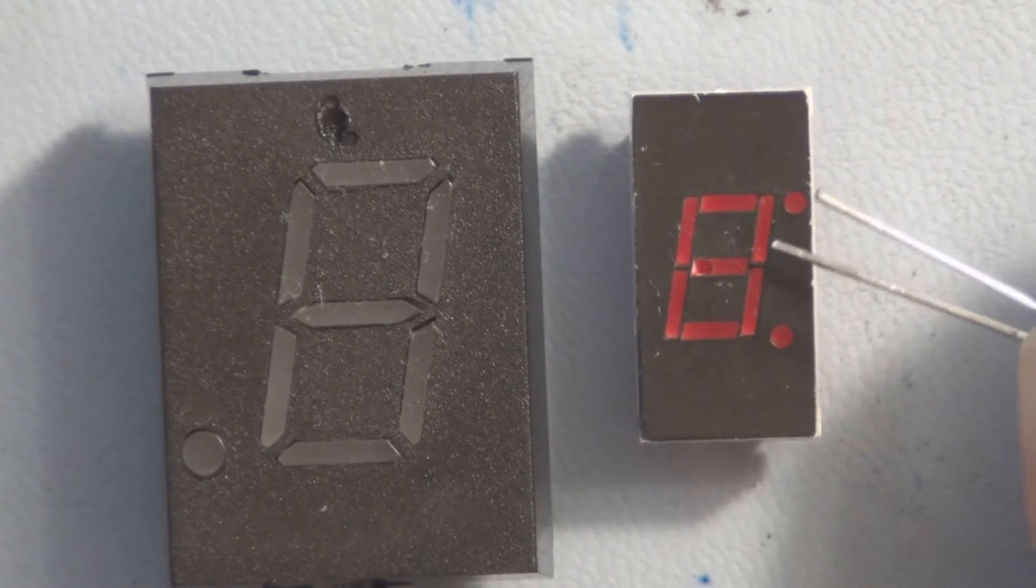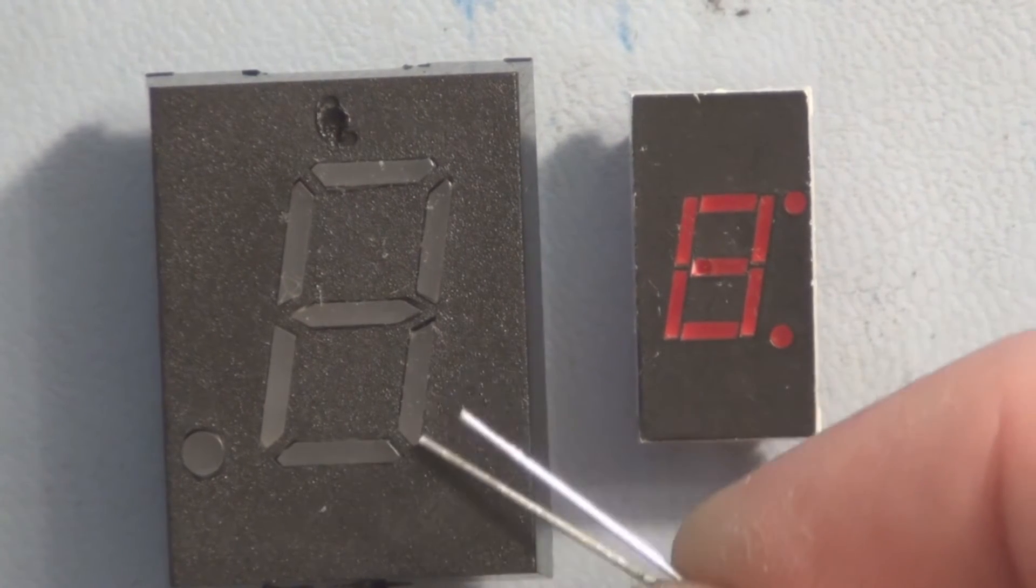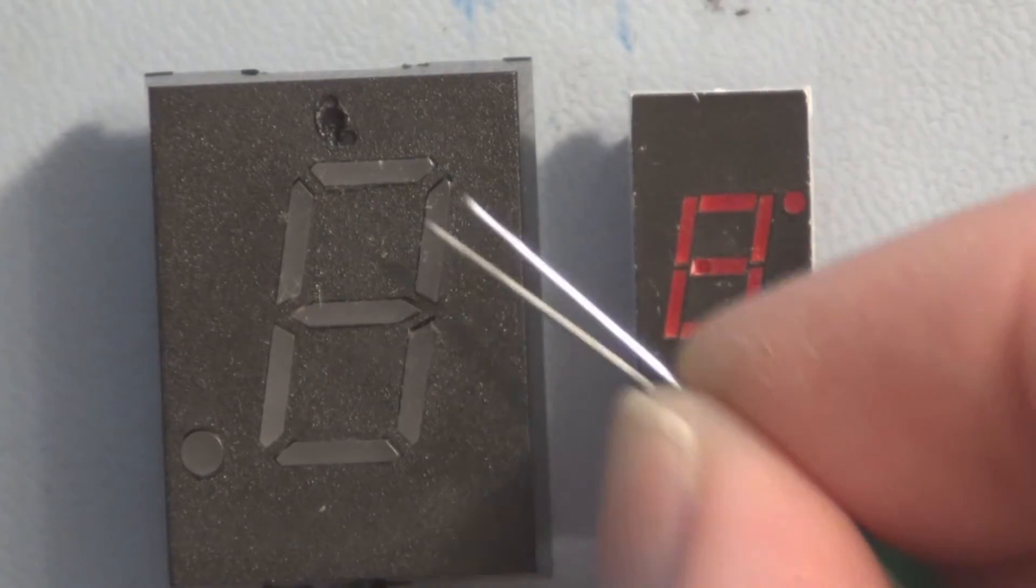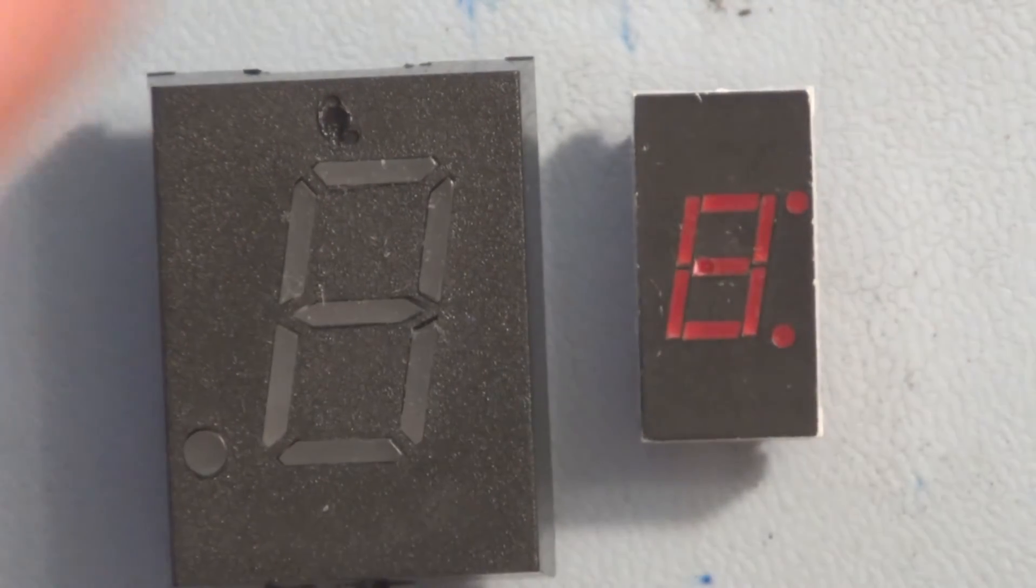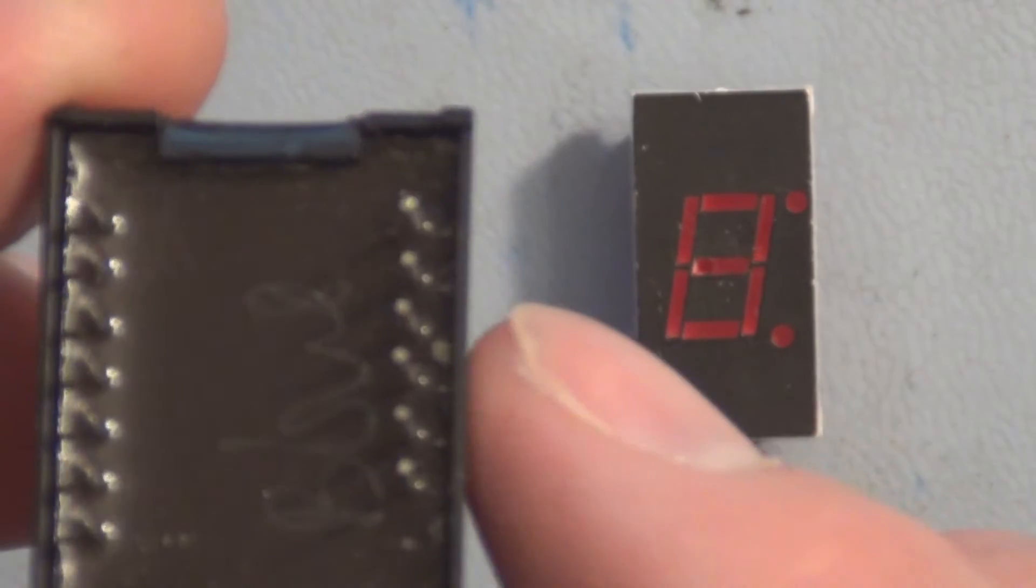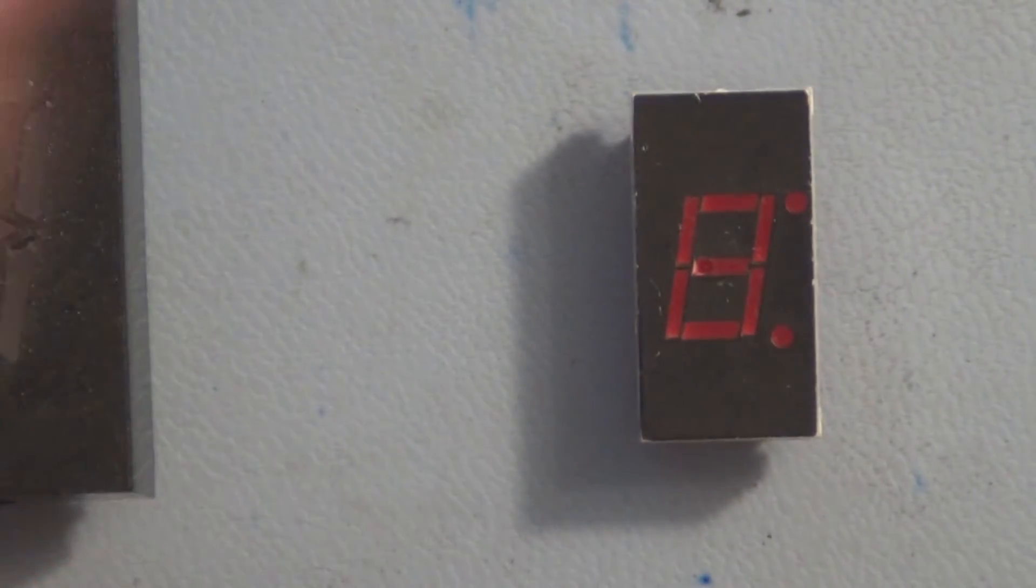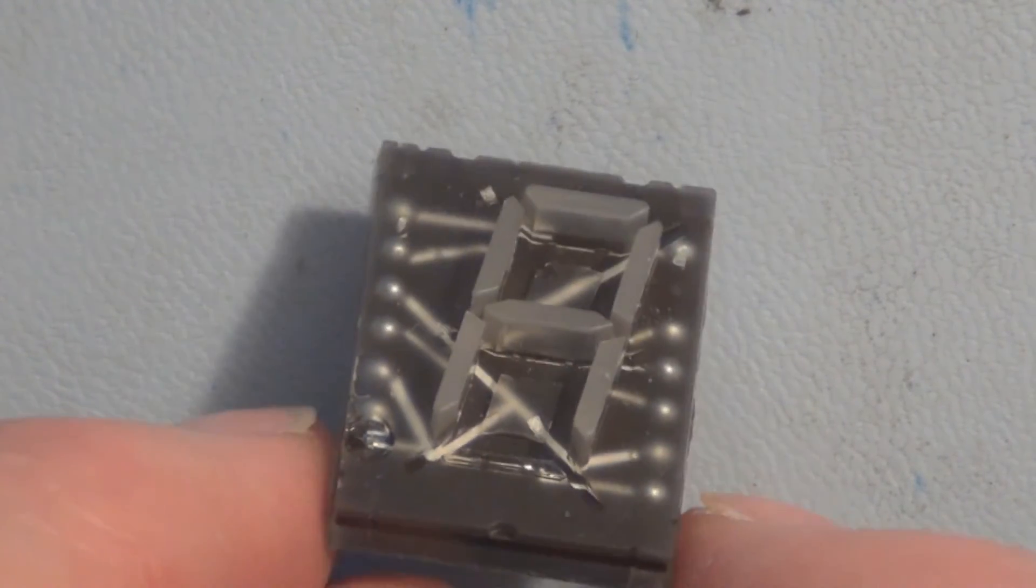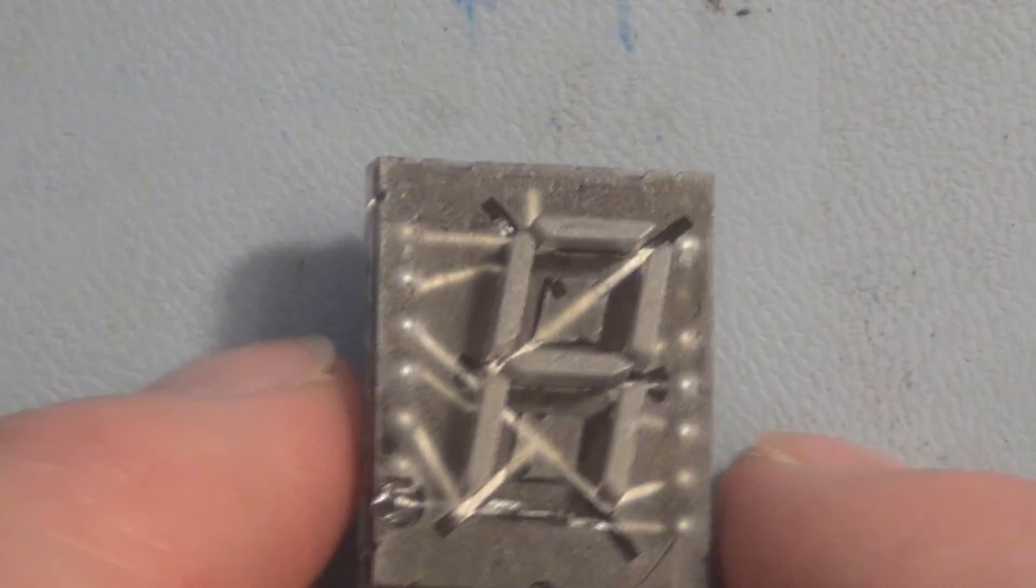They have this plastic where they're trying to direct the light more efficiently out to the viewer. So the LED is on the bottom of each of these segments, all encased here.